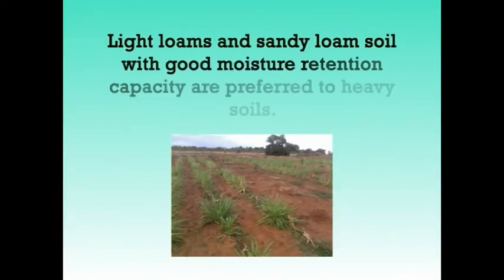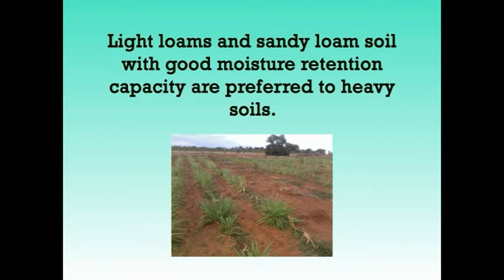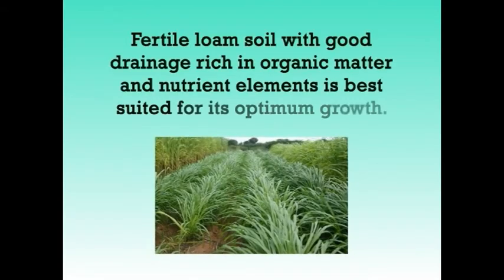Napier grass grows well on a variety of soils. Light loam and sandy loam soils with good moisture retention capacity are preferred to heavy soils. Fertile loam soils with good drainage, rich in organic matter and nutrient elements, is best suited for its optimum growth. The grass does not thrive well on waterlogged and flood-prone land. Therefore, soil should be kept moist at the root zone but there should not be water stagnation. It can withstand saline conditions to some extent and is established well at a pH range of 5 to 8.